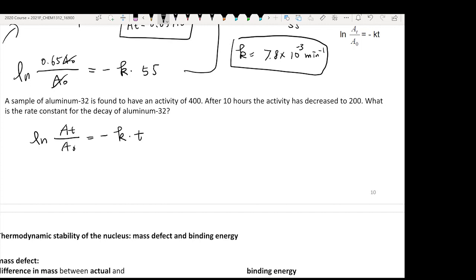The information clearly shows it's 10 hours, so you have your t here. You want to find your k. That means you need to figure out your At over A0.